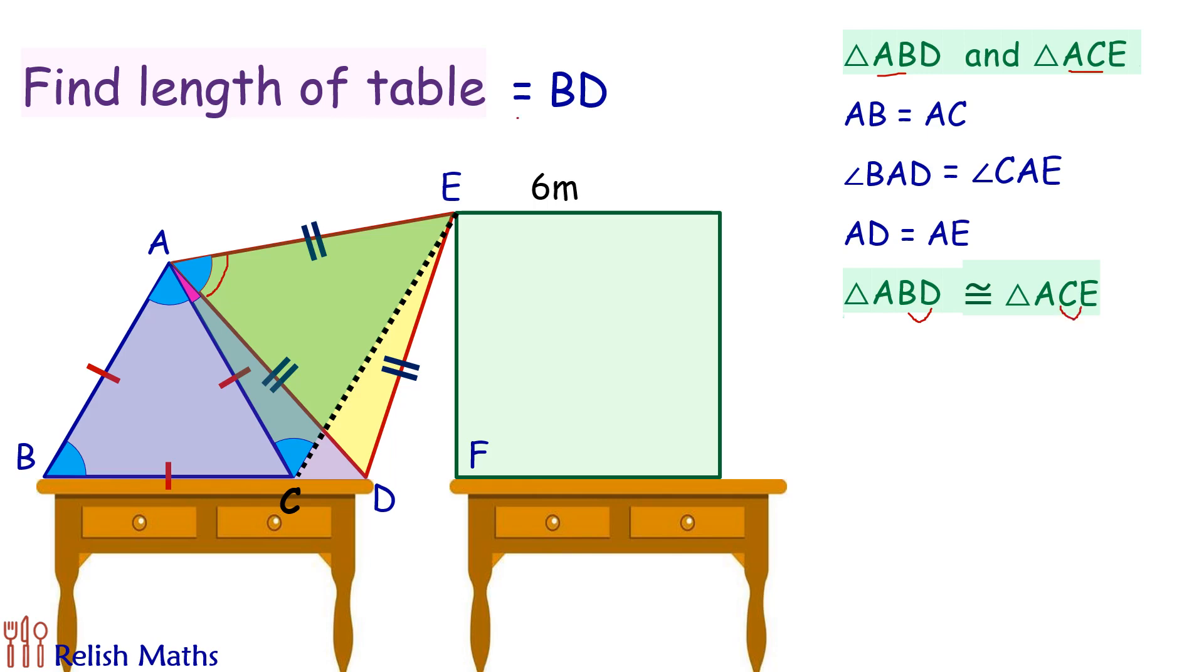So basically when we are saying we have to find the length BD, it is same as we have to find the length CE. Now let's consider the triangle CFE. So this triangle CFE is this pink triangle. In this triangle if we look, this angle is 60 degrees, this angle we have already concluded is also 60 degrees, so this remaining angle will also be 60 degrees.